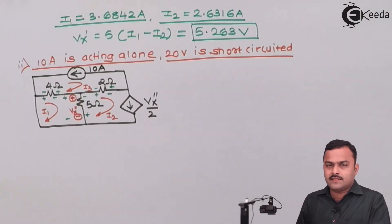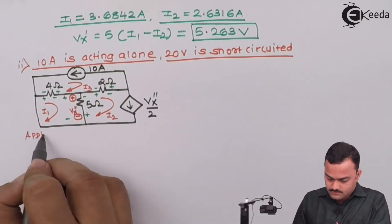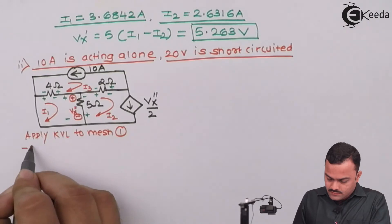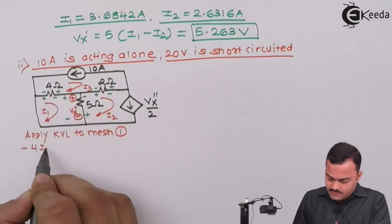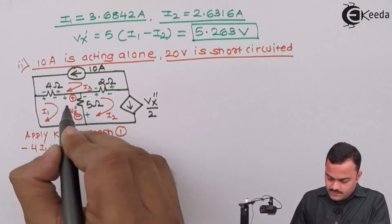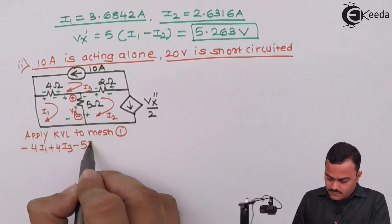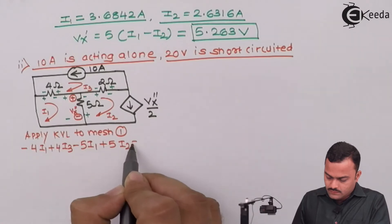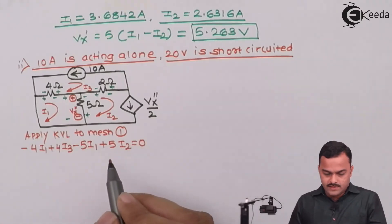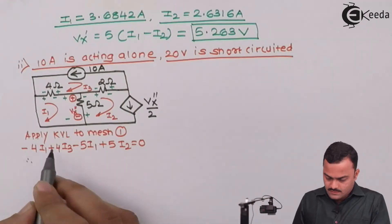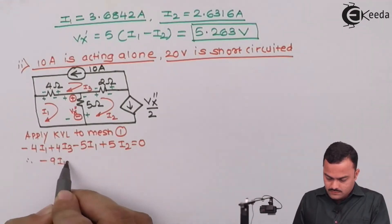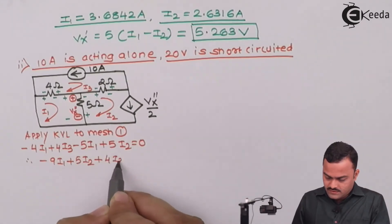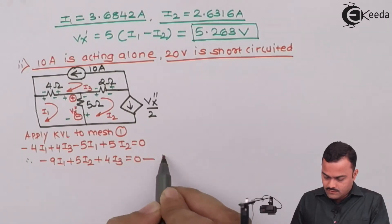Applying KVL to mesh 1: minus 4·I1, plus 4·I3, minus 5·I1, plus 5·I2 equals 0. Upon simplifying, we get equation 1: minus 9·I1 plus 5·I2 plus 4·I3 equals 0.